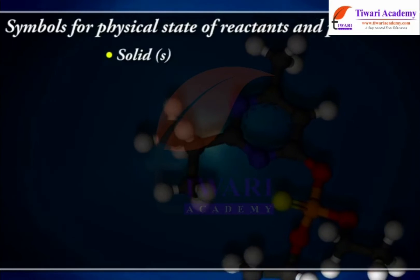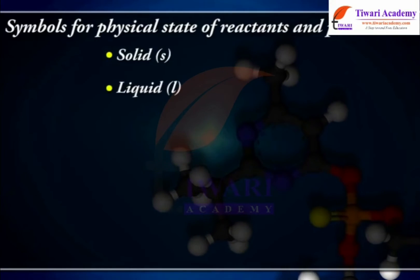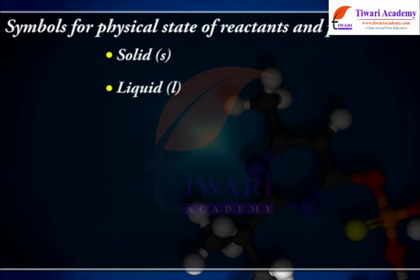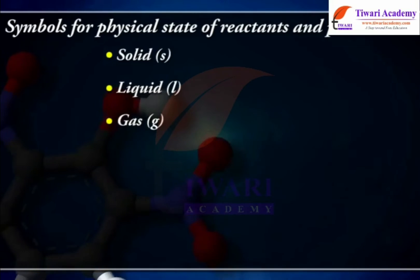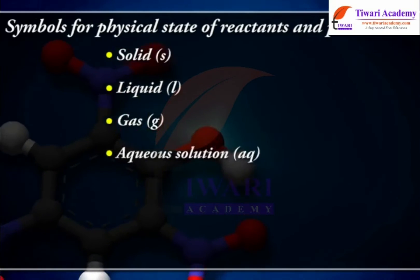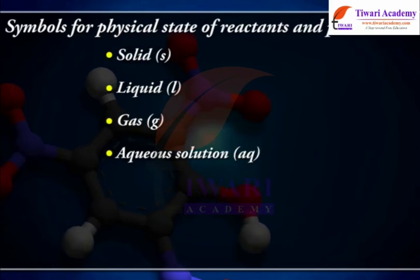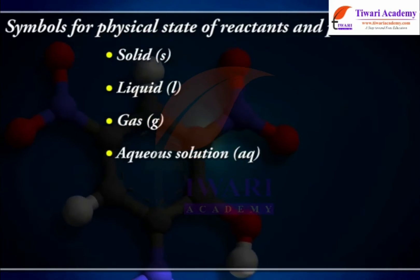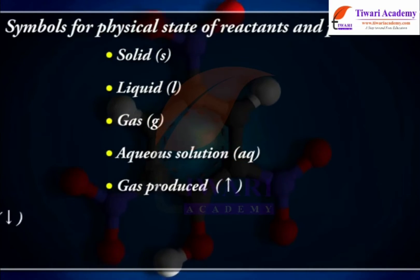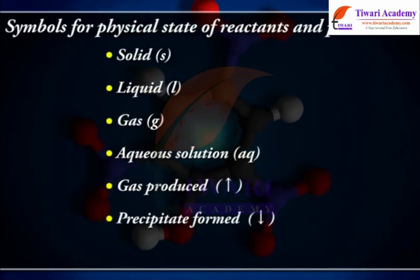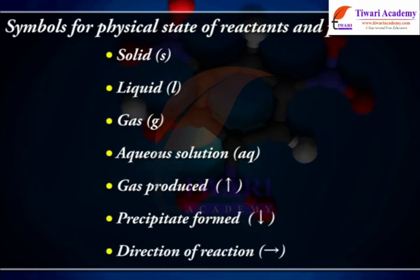The symbols for physical states are: solid (s), liquid (l), gas (g), and aqueous solution (aq). Additional symbols indicate gas produced, precipitate formed, and the direction of the reaction.